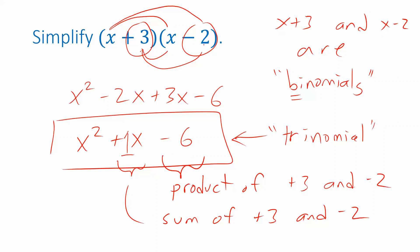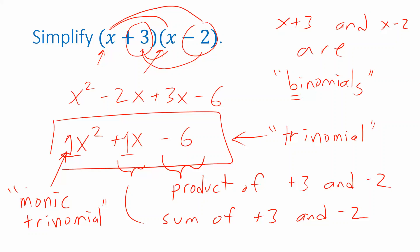That only works out that way because both binomials have just an x. If either had a coefficient like 2x or 3x, we'd have to do something more complicated, but we're not going to cover that in this video. We're going to stick to problems where the coefficient in front of x squared is a hidden 1. Because that coefficient is 1, this is called a monic trinomial — the prefix 'mono' means 1. So we're only going to be factoring monic trinomials and we'll get a product of binomials as the result.